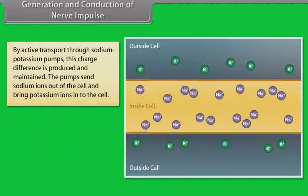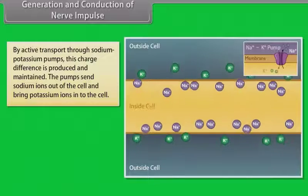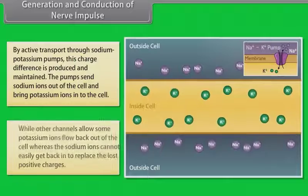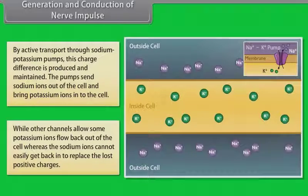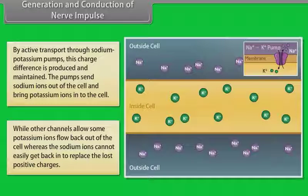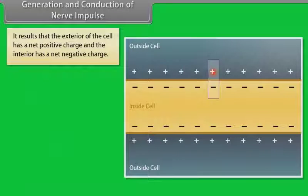By active transport through sodium-potassium pumps, this charge difference is produced and maintained. The pumps send sodium ions out of the cell and bring potassium ions into the cell, while other channels allow some potassium ions to flow back out of the cell, whereas the sodium ions cannot easily get back in to replace the lost positive charges. It results in the exterior of the cell having a net positive charge and the interior having a net negative charge.